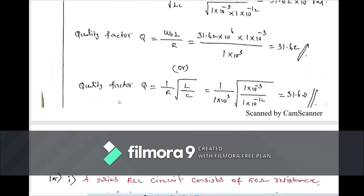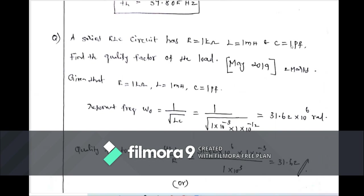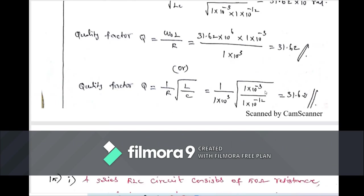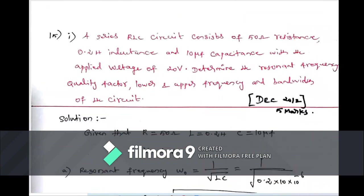Alternatively, we can use the third formula Q = (1/R)√(L/C). Since R, L, and C are all given directly, substituting yields the same answer: Q = 31.62. This confirms that any of the three quality factor formulas gives the same result. This is also an important exam problem.